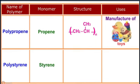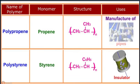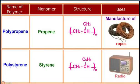Polystyrene: the monomer is styrene and it is used in the manufacture of radio, television cabinets, insulators and wrapping materials.